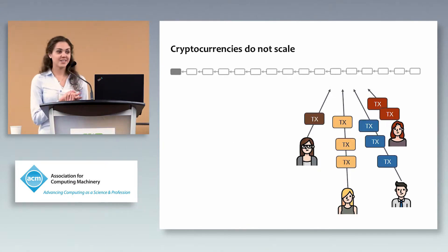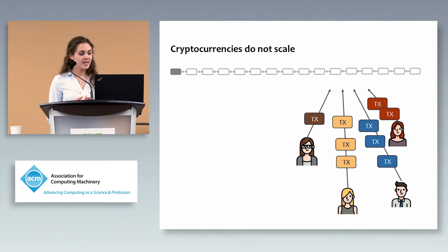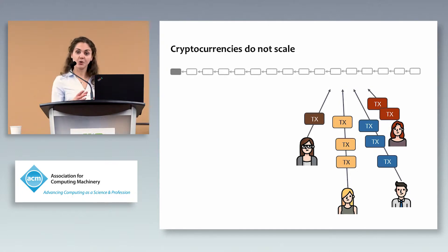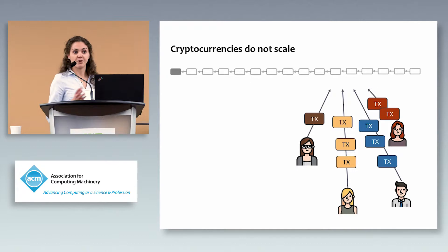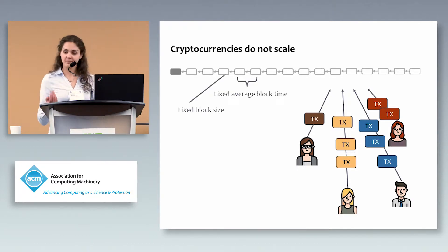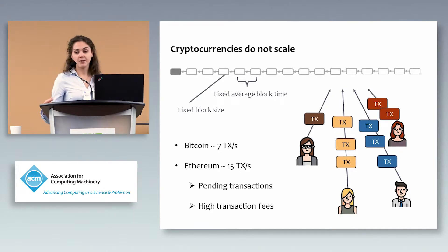As you have heard several times today, the common problem of cryptocurrencies is that they don't scale very well. Every transaction posted to the blockchain has to be stored in a block. Taking Bitcoin as an example, a new block appears roughly every 10 minutes and the block size is limited to one megabyte, imposing a maximum throughput. For Bitcoin, that's roughly seven transactions per second.